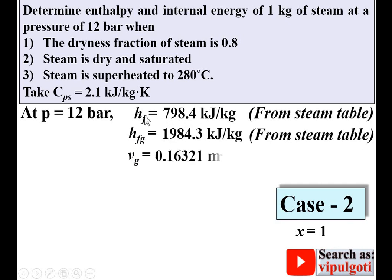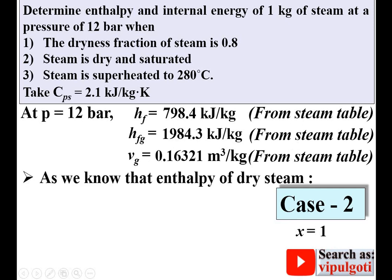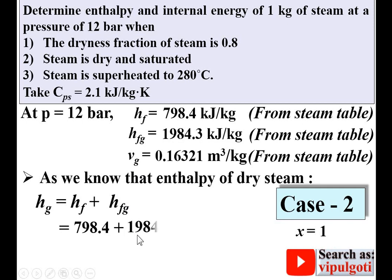For case 2, at 12 bar the steam is dry and saturated, so x = 1. Using the same steam table values, the enthalpy of dry saturated steam is hg = hf + hfg = 798.4 + 1984.3 = 2782.7 kJ/kg. Box this as the first answer for case 2.